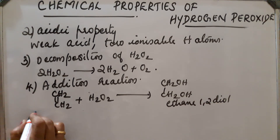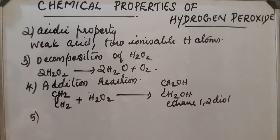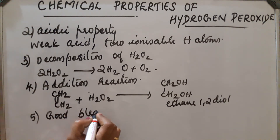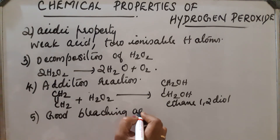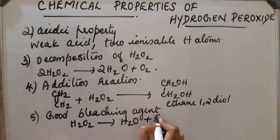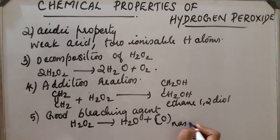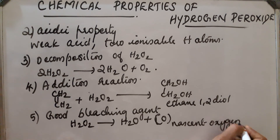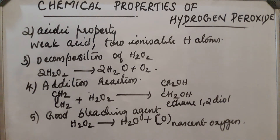Next important property: H₂O₂ is a good bleaching agent for delicate materials like ivory, silk, and wool. The reaction: H₂O₂ → H₂O plus nascent oxygen [O]. This nascent oxygen combines with the coloring matter, which gets oxidized, and due to this oxidation the bleaching action takes place. These are the important chemical properties of hydrogen peroxide.